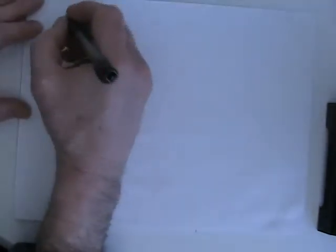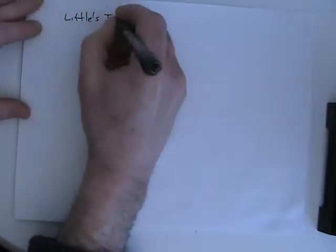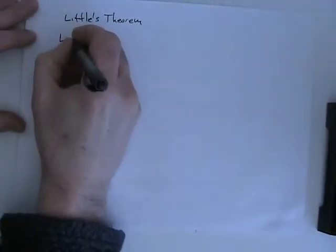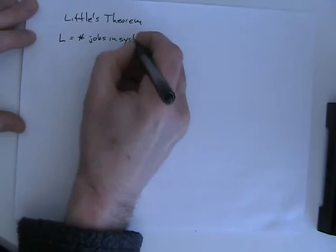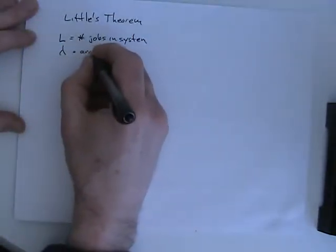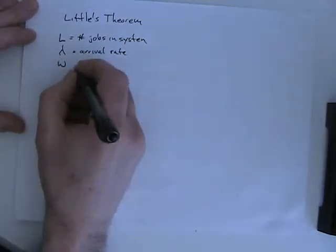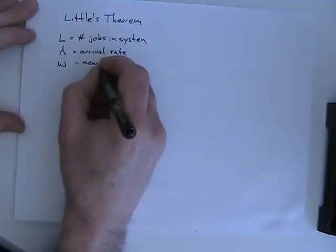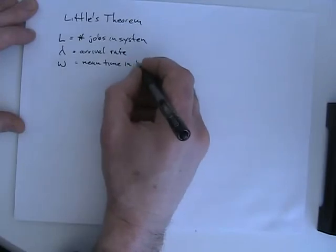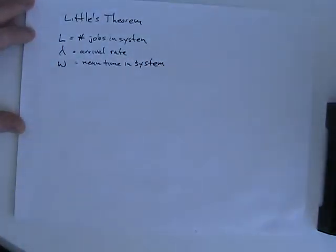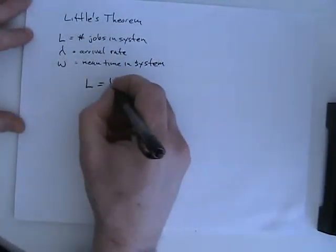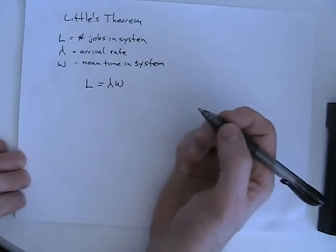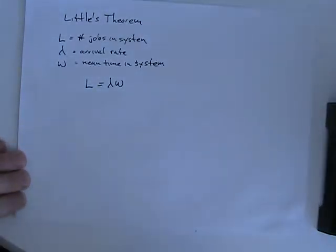The next thing we'll look at is Little's theorem. It relates: L, the number of jobs in the system; lambda, the arrival rate; and W, the mean time in the system for a single job. It states that L equals lambda times W — the number of jobs in the system equals the arrival rate times the time each job waits.